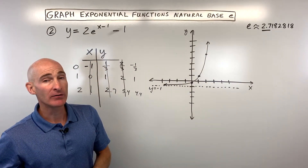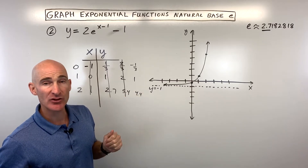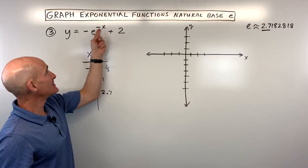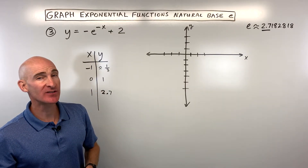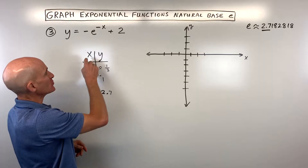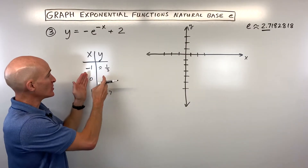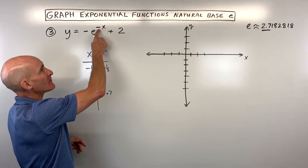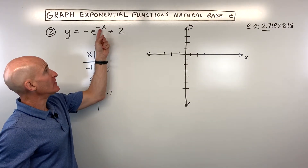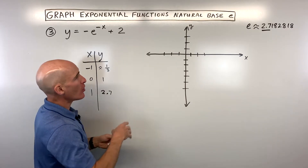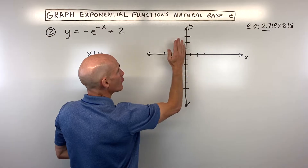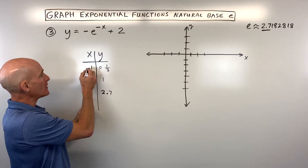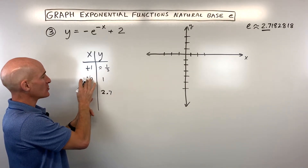Let's take a look at our third example. We have y equals negative e to the negative x power plus 2. Starting with the parent function y equals e to the x, working from the inside out: the negative x makes all the x-values the opposite sign, which reflects the graph over the y-axis. So I multiply the x-values by negative 1, making them positive 1, 0, and negative 1.